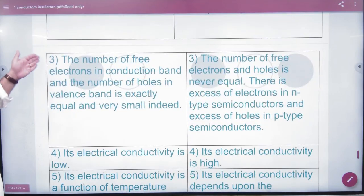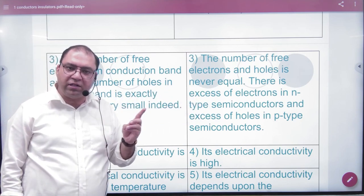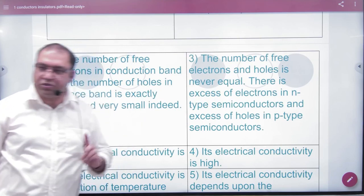In intrinsic semiconductors, the number of free electrons in the conduction band and holes are equal (N-E equals N-H). In extrinsic semiconductors, this does not happen. In N-type, there are excess free electrons, and in P-type, there are excess holes.